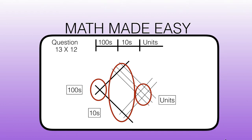So now we have 1, 2, 3, 4, 5, 6 units — so we write 6 in the units box. We have 1, 2, 3, 4, 5 tens — so we write 5 in the tens box. And we have 100 — so we write 1 in our hundreds box.